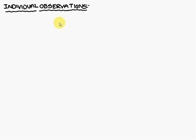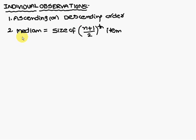For individual observations we will discuss the procedure. First, write the data in ascending or descending order. The second formula for median is size of n plus 1 by 2th item.